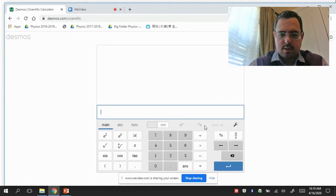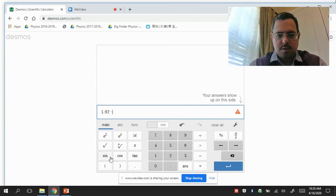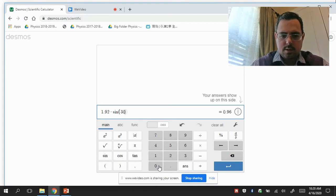I'm going to type in what you saw in the equation. So it was 1.92 times, and we have to do sine of 30 degrees. So how do we do that? Come over here on the left side, you'll see S-I-N, click on that button, type in 30, and then close the parentheses. Okay.